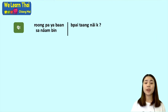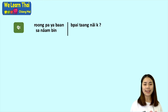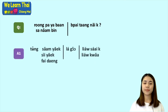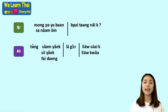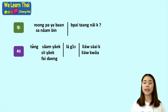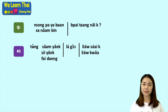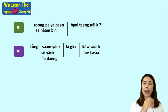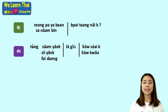For the question you can say 'rong phayabal bai thang nai kha?' — which way to the hospital? For the answer: 'tungen sam yag lag o leo sai kha' — go straight to the T-junction and then turn left. Or 'tungen see yag lag o leo kwa kha' — go straight to the crossroad and turn right. Or 'tungen fai dang lag o leo kwa kha' — when you reach the traffic light, turn right.